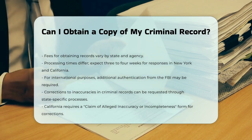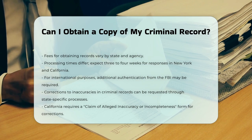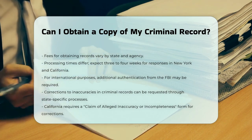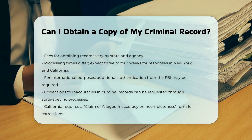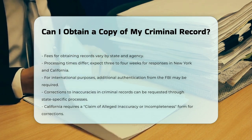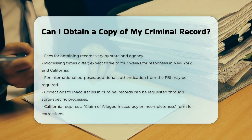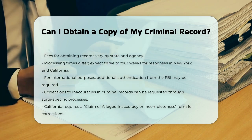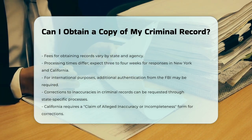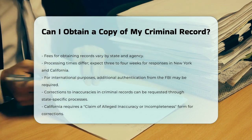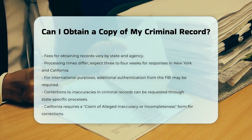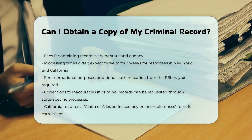If you find inaccuracies in your criminal record, you can request corrections. Each state has its own process for correcting errors, which may involve filling out a specific form or writing a letter to the agency maintaining your record. For example, in California, you need to complete the Claim of Alleged Inaccuracy or Incompleteness form and include any available proof or corroboration.